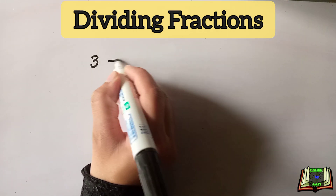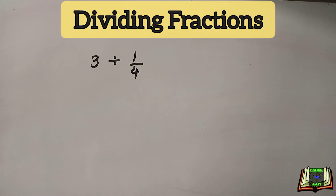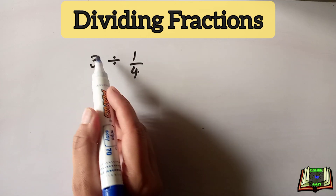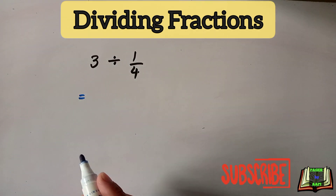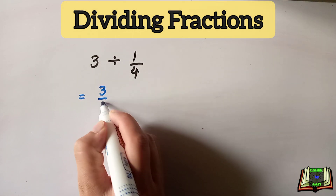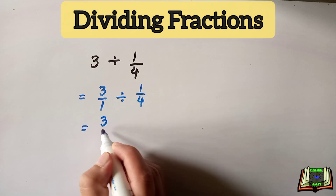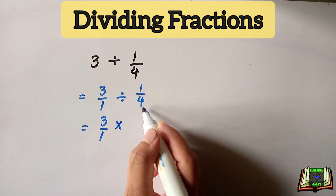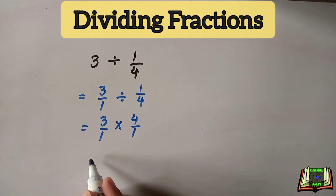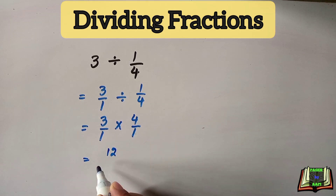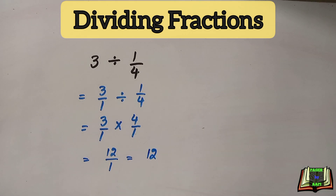On the numerator we have one into two, and in the denominator we have one into one, so that is equal to two by one, which is basically equal to two. If we have a question where a whole number is divided by a fractional number, we first change the whole number into a fractional number. Three can be written as three by one, and then we divide. Three by one stays the same, multiply, then four by one — we get three by four, which is twelve divided by one, equal to twelve.